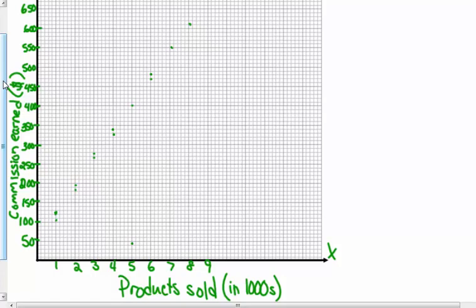So I put all of my points on there — I count fourteen of them. Yes, there are fourteen weeks, so I didn't forget any. I have all my labels. Now I need to draw the line of best fit.